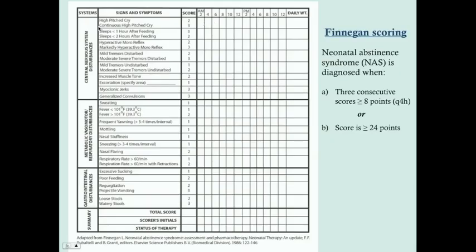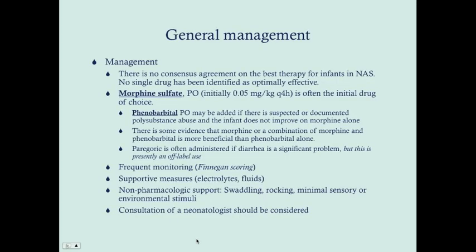The Finnegan scoring system does not need to be memorized for the USMLE, but it illustrates the symptoms that occur in babies with neonatal abstinence syndrome. NAS is diagnosed when there are three consecutive scores of more than 8 points — typically taken every four hours — or if one score is ever greater than 24 points.